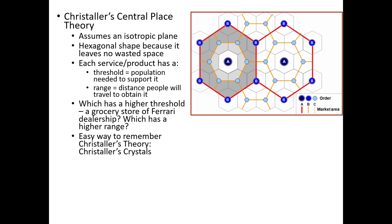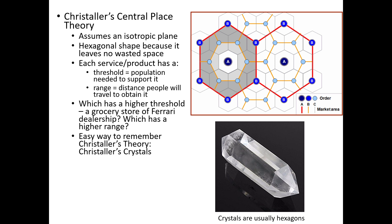Here's an easy way to remember Christaller's theory: in his name you can see the word 'crystal,' and crystals are usually hexagons. So if you can remember that, you'll probably remember that Christaller's theory is a model of cities and their surrounding smaller cities arranged in hexagonal patterns.